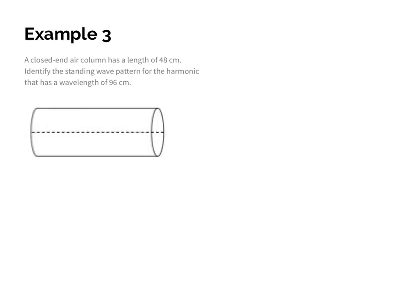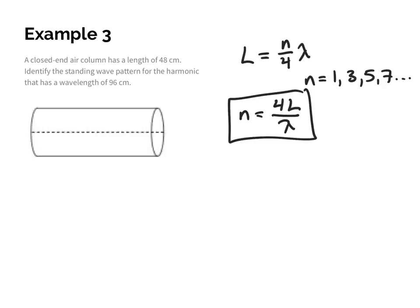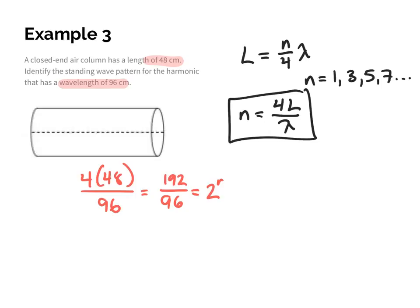For the relationship between length and wavelength in closed-end air columns: n = 4L / λ, where n can only be odd numbers — one, three, five, seven, and so on. For a length of 48 cm and wavelength of 96: 4 × 48 = 192, divided by 96 = 2. But since only odd harmonics exist, the second harmonic is not possible in a closed-end air column.